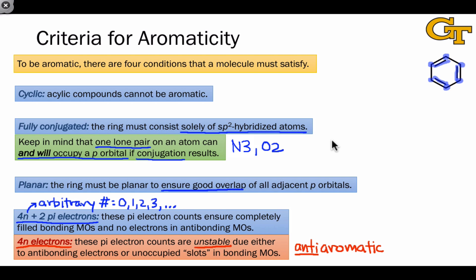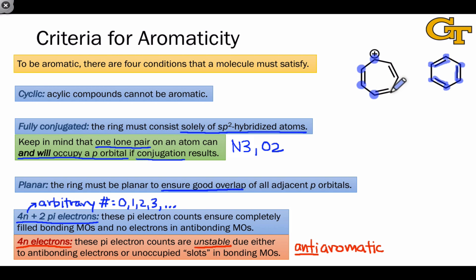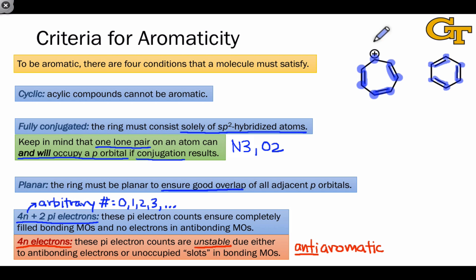There are other ways to put 6 pi electrons in a cyclic array of p orbitals. The molecule is very clearly cyclic. We would expect it to be planar based on the sp2 hybridization of all of these atoms, and for the same reason we expect the molecule to be fully conjugated. If we count the number of pi electrons, we get 2 each from the pi bonds for a total of 6, and the positively charged carbon actually contributes no pi electrons to the pi system. So the total number of pi electrons here is 6, and this molecule is aromatic.